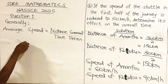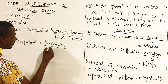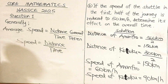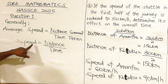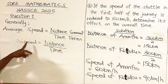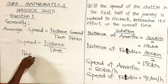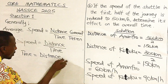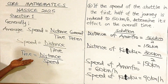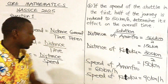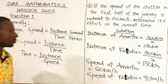Speed is equal to distance over time. In that case, if I want to make time the subject, I'll just swap these two positions. So time will be equal to distance all over speed. Now I'm going to calculate the time for Amanfro, then afterwards calculate the time for Kotoku.